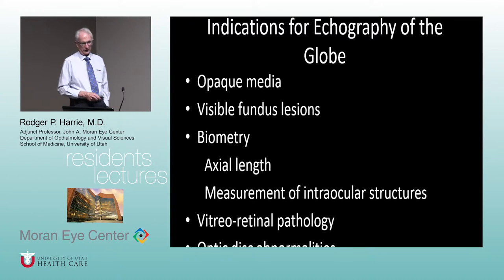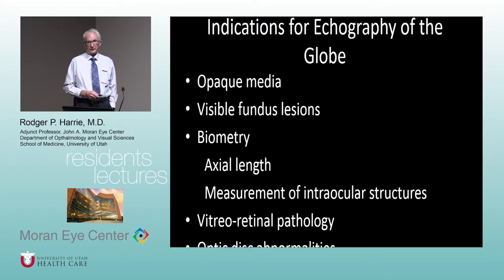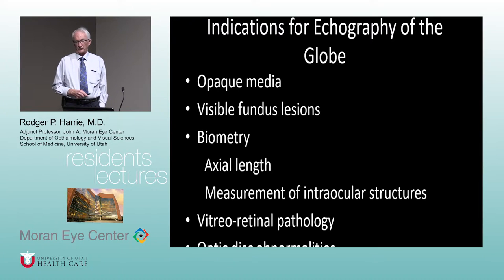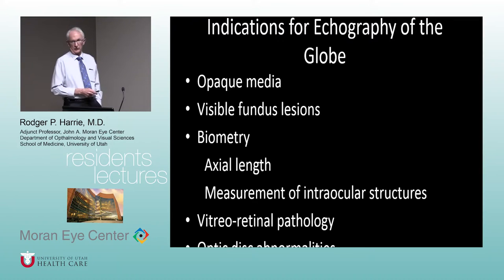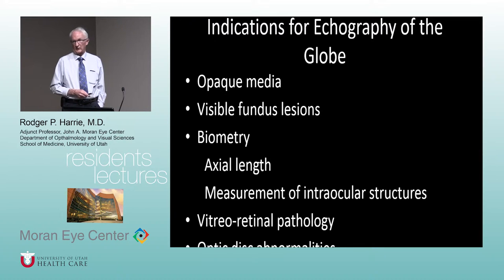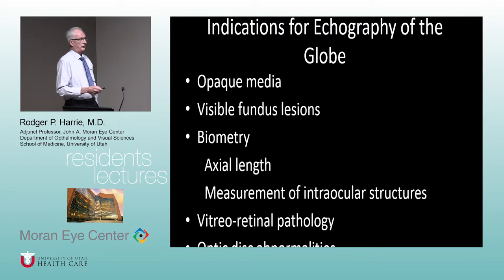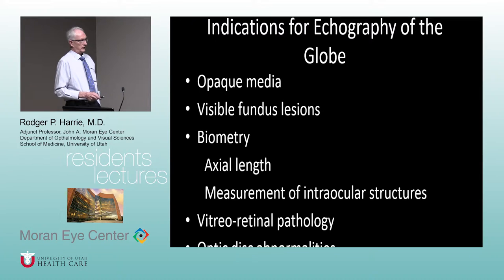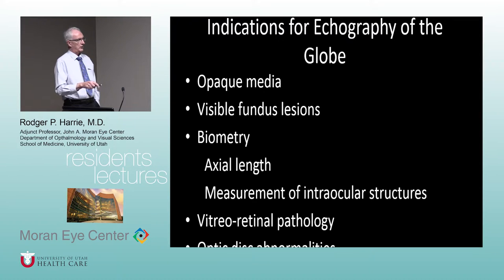Indications for ultrasound: opaque media — obviously you can't see inside the eye. Medico-legally, there have been cases where a tumor was hiding behind a dense cataract and wasn't detected prior to surgery. That's problematic — there's also risk of disseminating tumor cells during surgery. So you need to know what's behind the cataract. Other indications include visible fundus lesions, biometry for axial length, tumor measurement, vitreoretinal pathology, and optic nerve abnormalities.